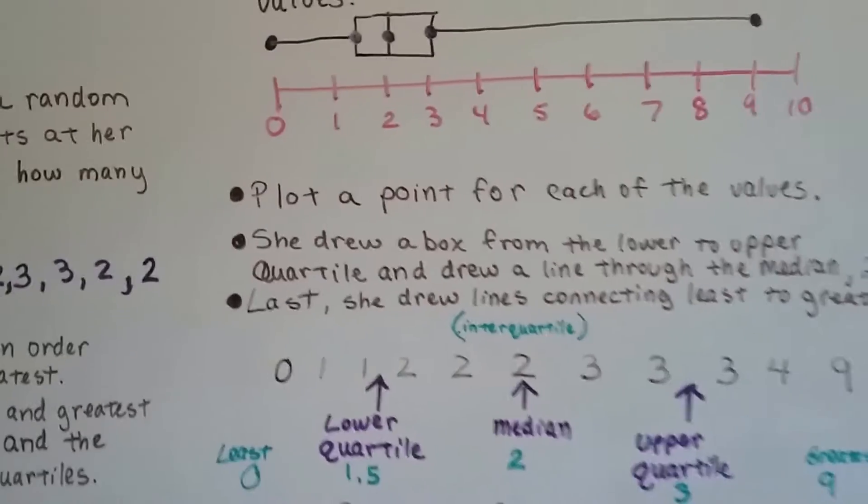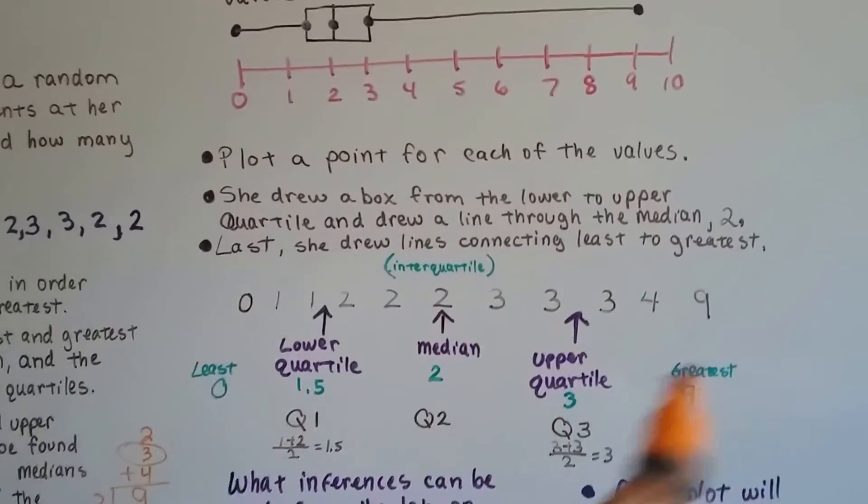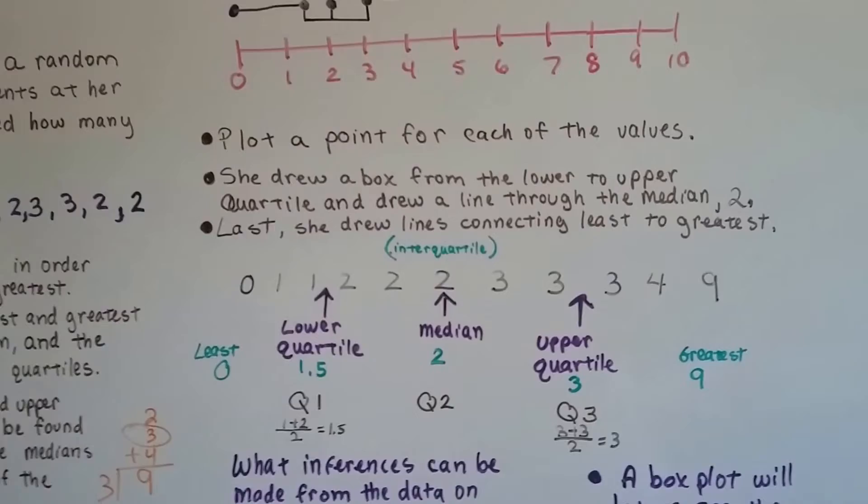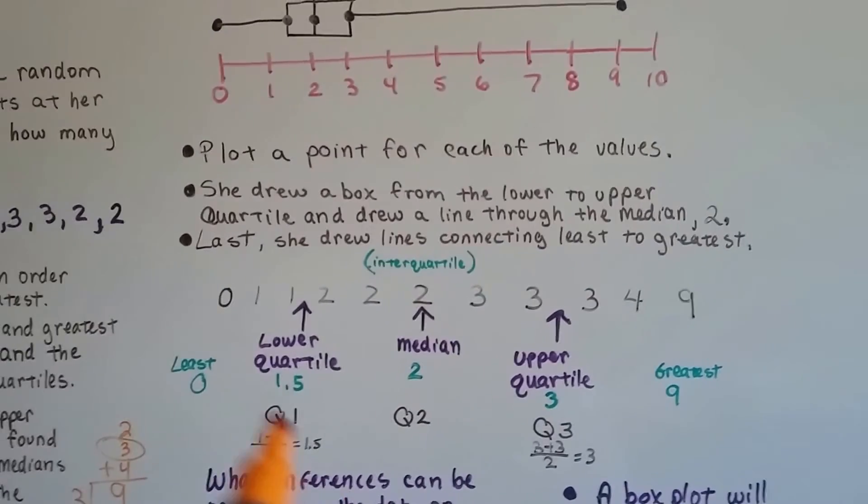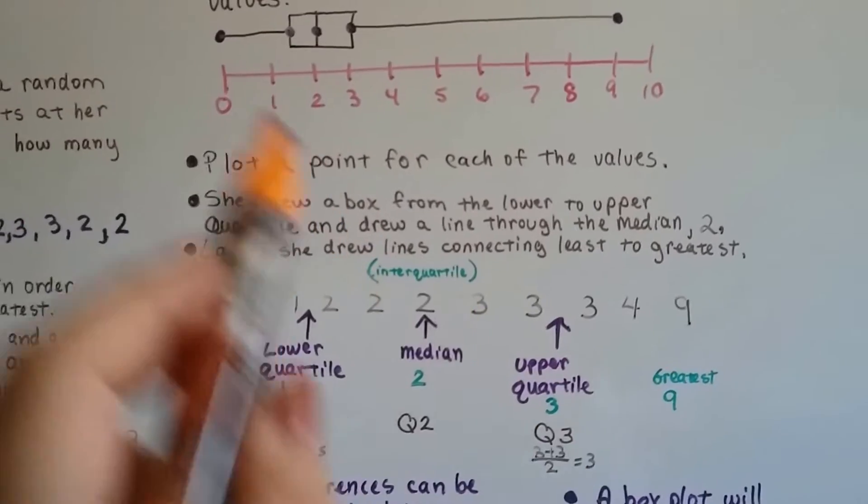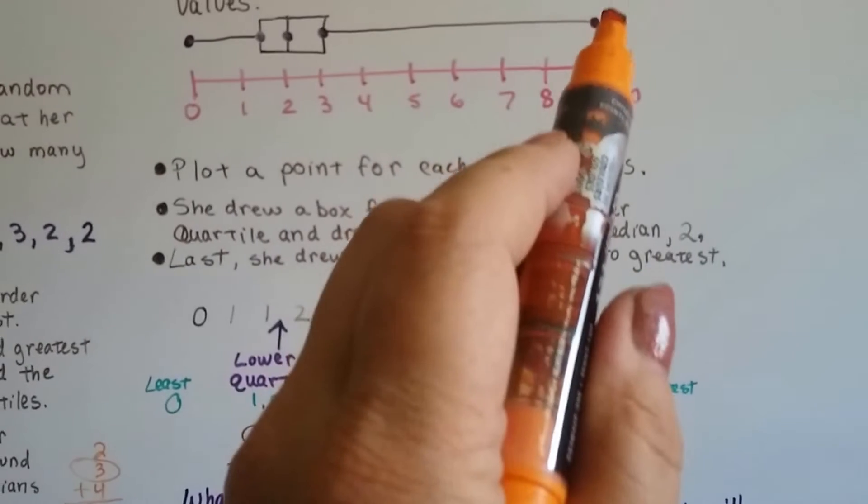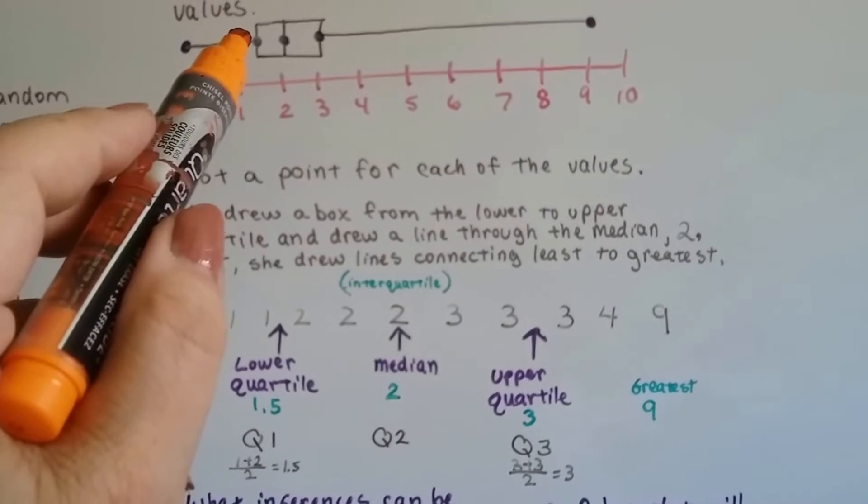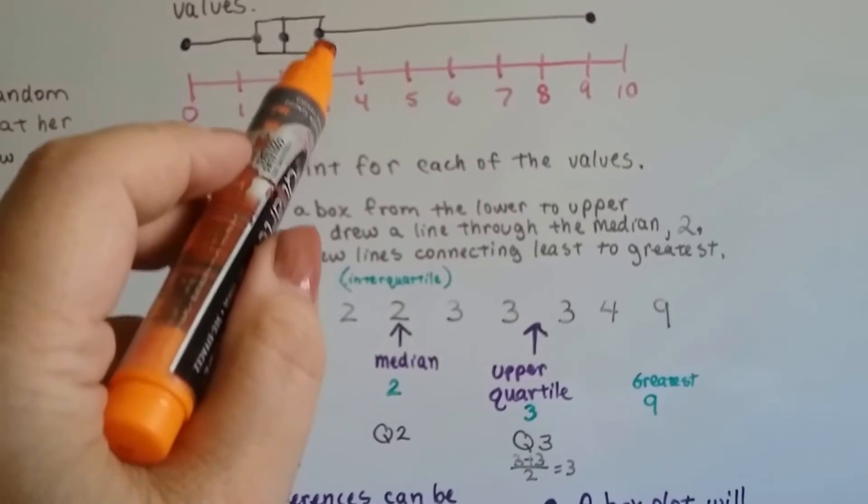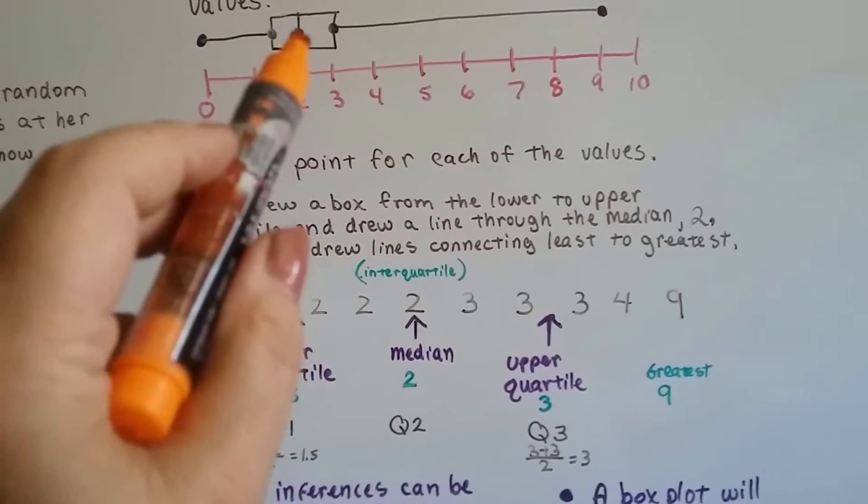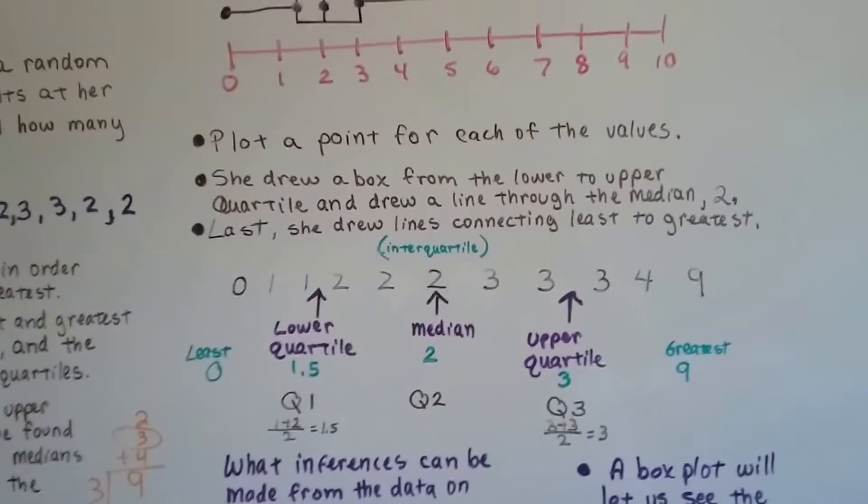So that's a box and whisker plot. You break it into four parts, quartiles, then you draw a box around the important numbers. Out of all these 12 digits, I've only got 5 points. I've got the least, the greatest, where the lower quartile cutting line is, the upper quartile cutting line is, and the median. That's all. I don't have every single one of them with dots here.